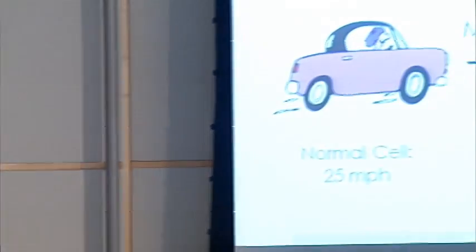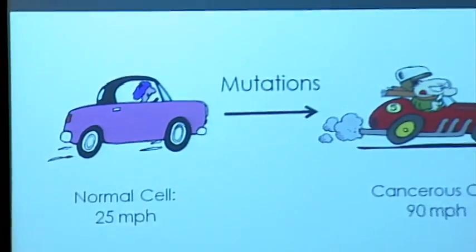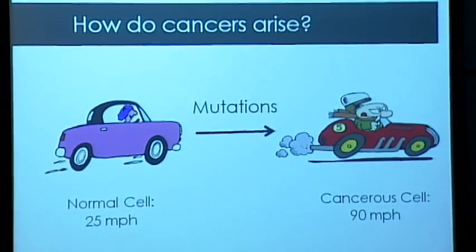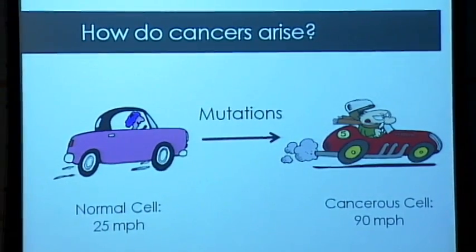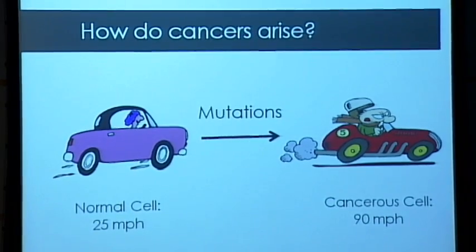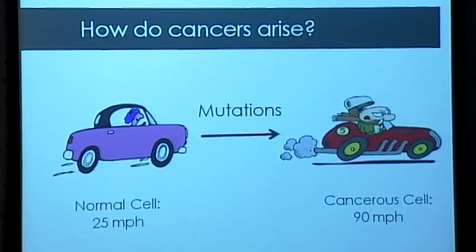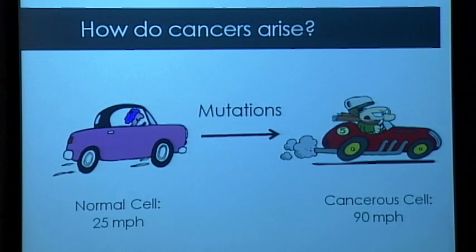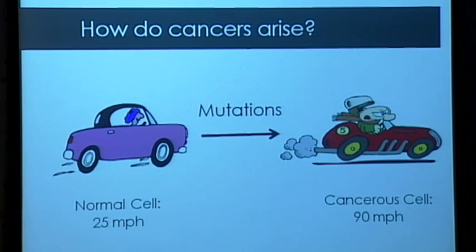Before getting into the research, let's go over some cancer basics. Cancer starts off from normal cells — cells in your body that acquire mutations, and those mutations make them rapidly proliferate, and this is dangerous. We can compare these normal cells to a car safely going 25 miles per hour, but it acquires mutations which make this car go way too fast down windy roads or residential areas. That car can crash, and that car can kill people.